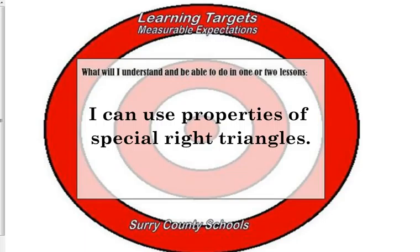There are several different categories of special right triangles. On that worksheet, several of those triangles had legs of 3 and 4 and a hypotenuse of 5. That's one type of special right triangle — a 3, 4, 5 triangle. There's also another one, a 5, 12, 13, where the legs are 5 and 12 and the hypotenuse is 13.